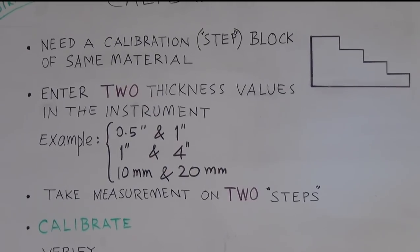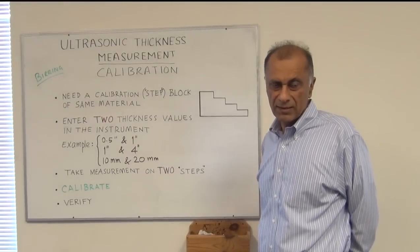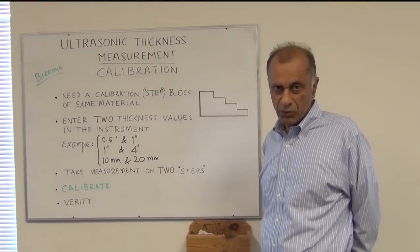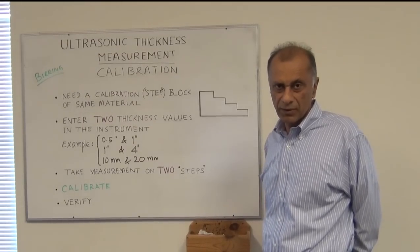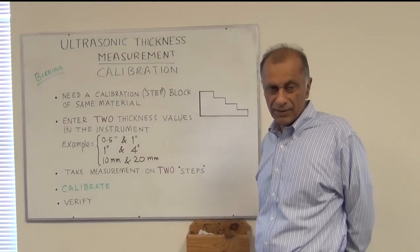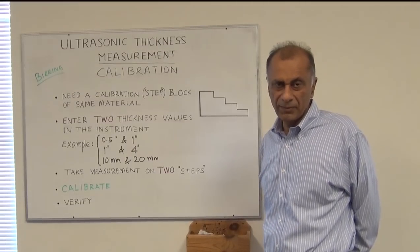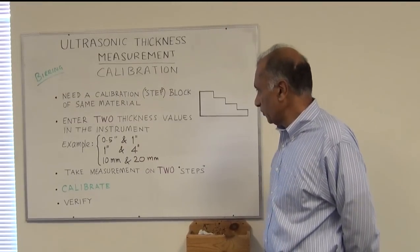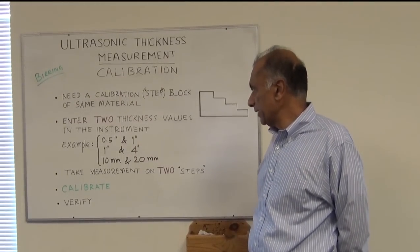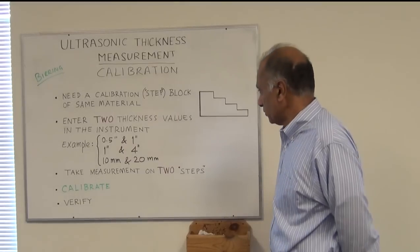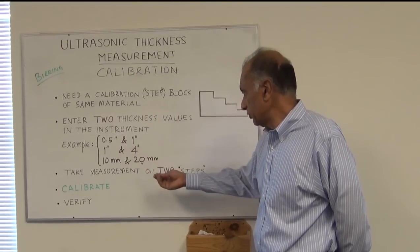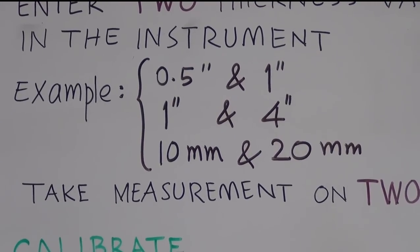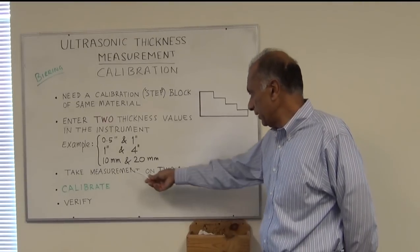First of all you need a step block with known thicknesses, normally a four step block or five step block. The four steps could be quarter inch, half inch, three quarter inch and one inch, or if it's in metric it would be 5mm, 10mm, 15mm, 20mm and 25mm. After that we select two thicknesses from the step block which could be for example half inch and one inch, or if you are using an IIW block then it would be one inch and four inch, or if you are using metric it could be 10 and 20mm.